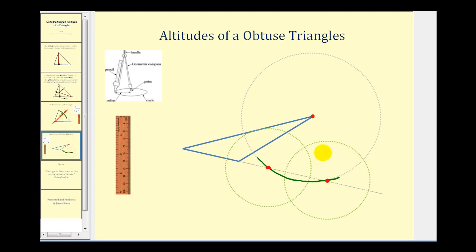Next we'll take the compass and put the point on one of the points of intersection, then open up the compass so that it extends past half the distance between the two points of intersection, and swing an arc above and below this side of the triangle. Putting the point on this point of intersection and swinging an arc above and below might look something like this.